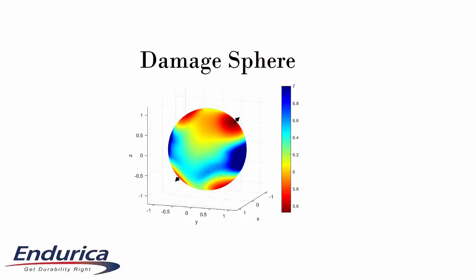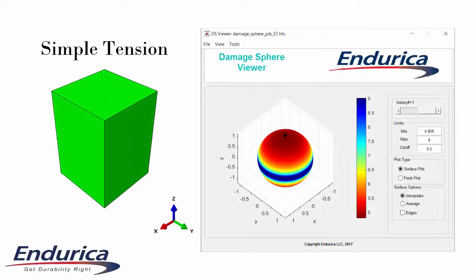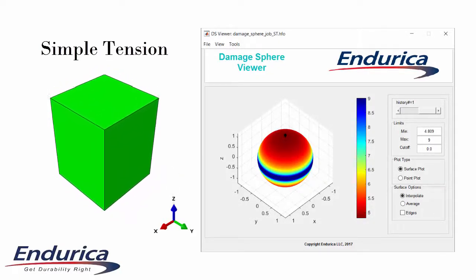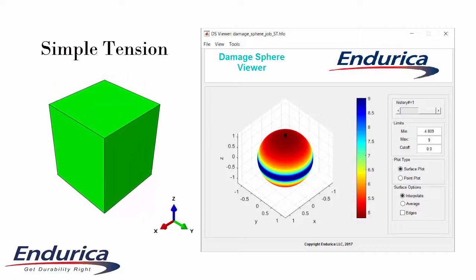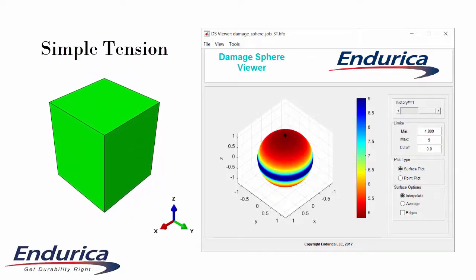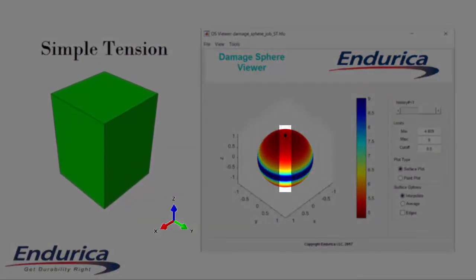Let's take a look at what critical plane analysis tells us about some common deformation modes. First, simple tension. The unit cube stretches in the z direction; the x and y directions are free. Intuitively, we expect that cracks initiate perpendicular to the stretched direction. We see this on the damage sphere by the fact that the critical plane normal vector is oriented along the z axis.